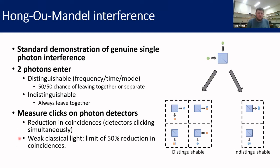What you're ideally looking for when you've got single photons is a reduction in coincidences below the limit of 50%. This 50% limit is the absolute limit in reduction that you can see when dealing with coherent light or thermal light, and not single photons.